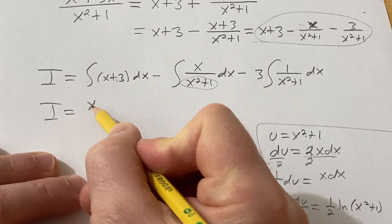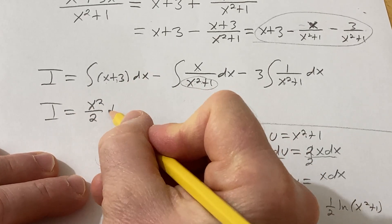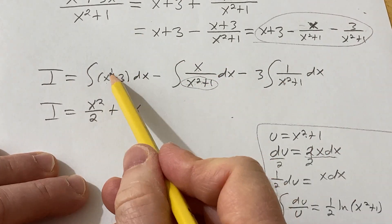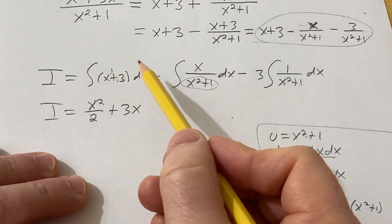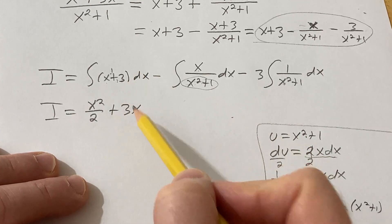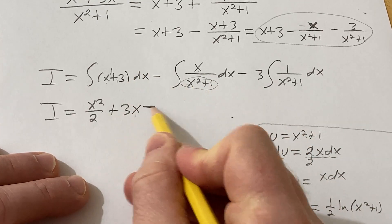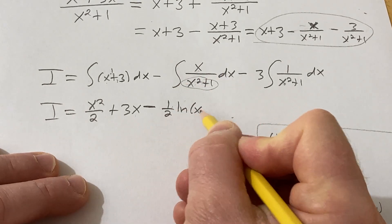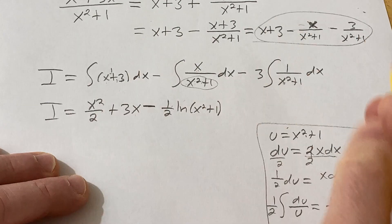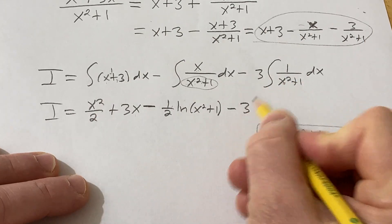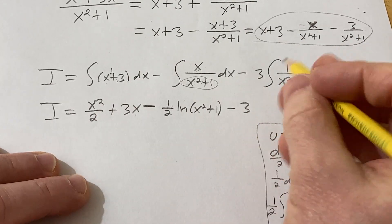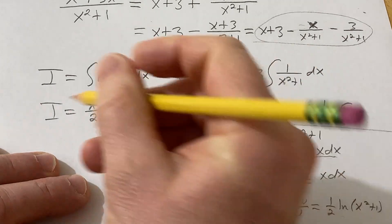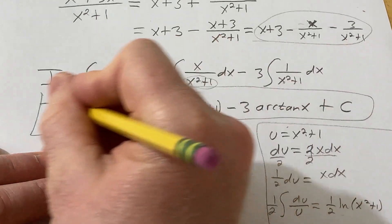So let's finish. This is going to be x squared over 2. The 3 is going to become a 3x. That's from the power rule. You just take 1 and add it to the exponent and divide by the result. Minus 1 half natural log x squared plus 1. And then minus 3. And this is going to give you an arctangent. So this is arctan x plus our constant of integration. So pretty easy.